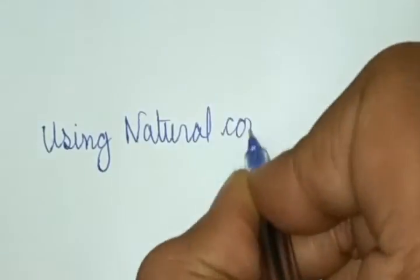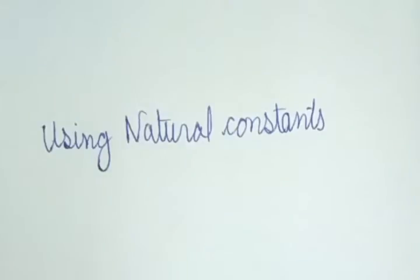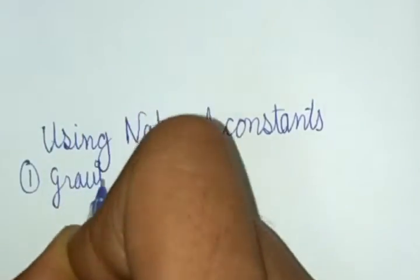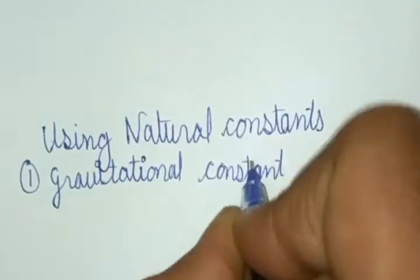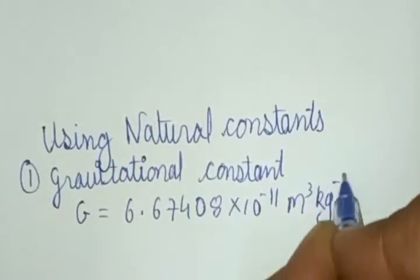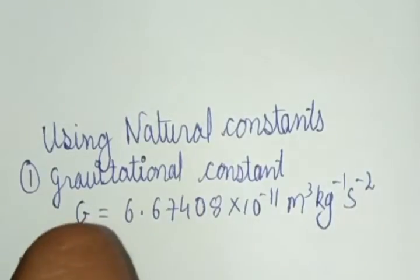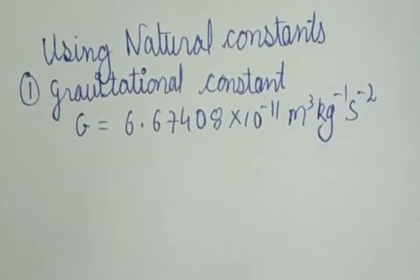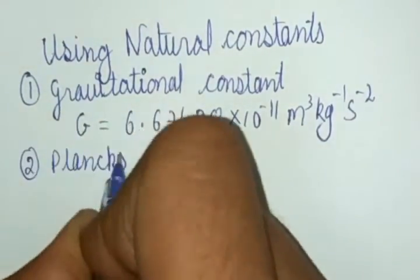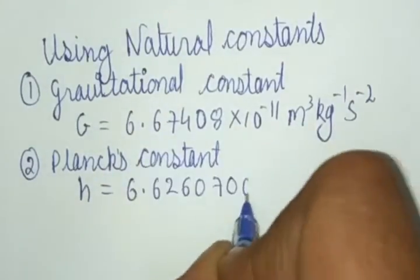The first one is gravitational constant. See, I have used a very accurate value - be careful for the units. The second one is Planck's constant. Again, I have used a very precise value.